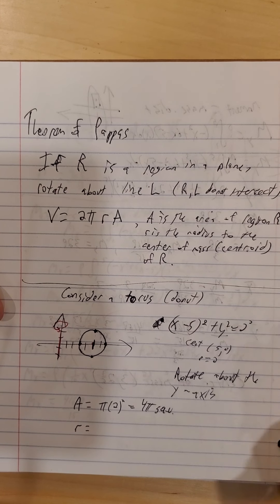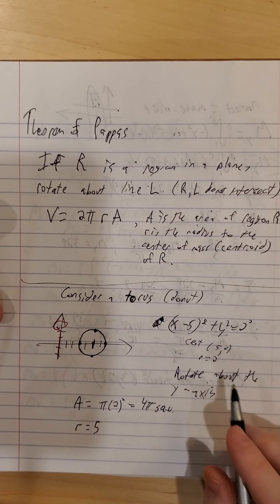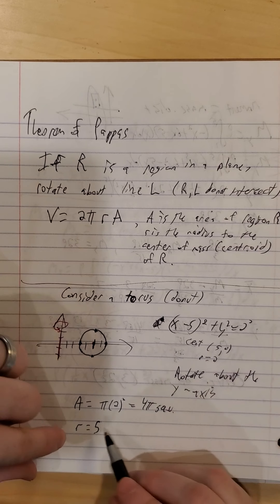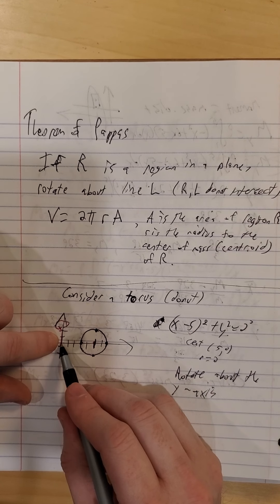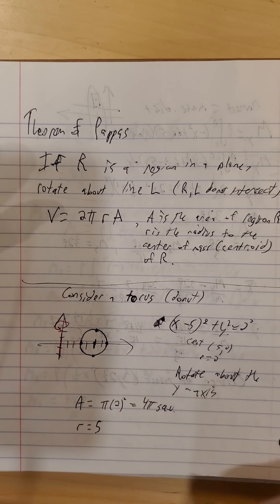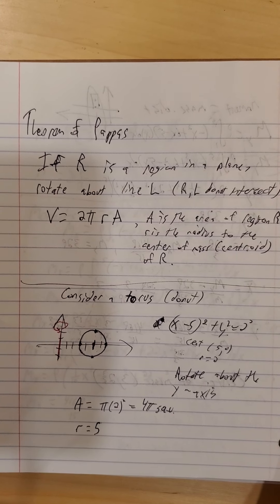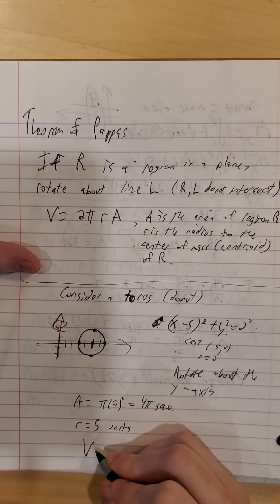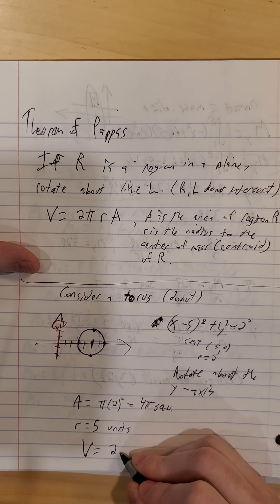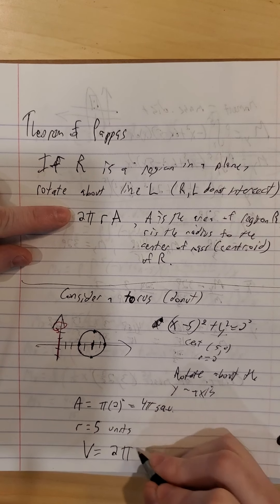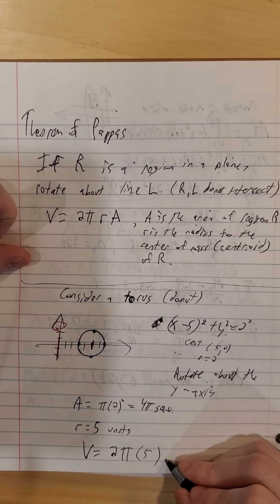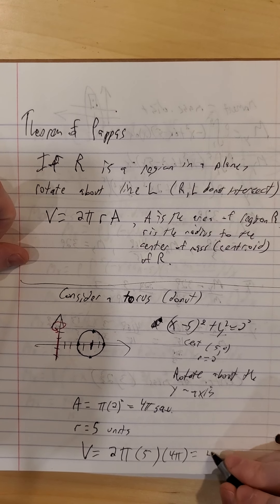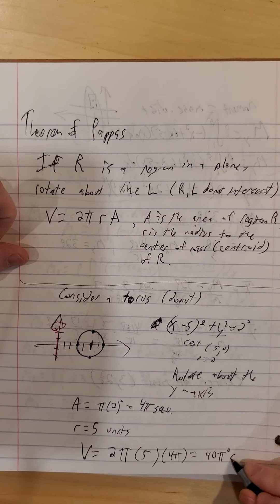So, two different radii here. The radius of the cross section. This one is the radius from our axis of rotation to the center of mass of our region. So, then our volume, by the theorem of Pappus, 2 pi times r times A. So, our volume is 40 pi squared cubic units.